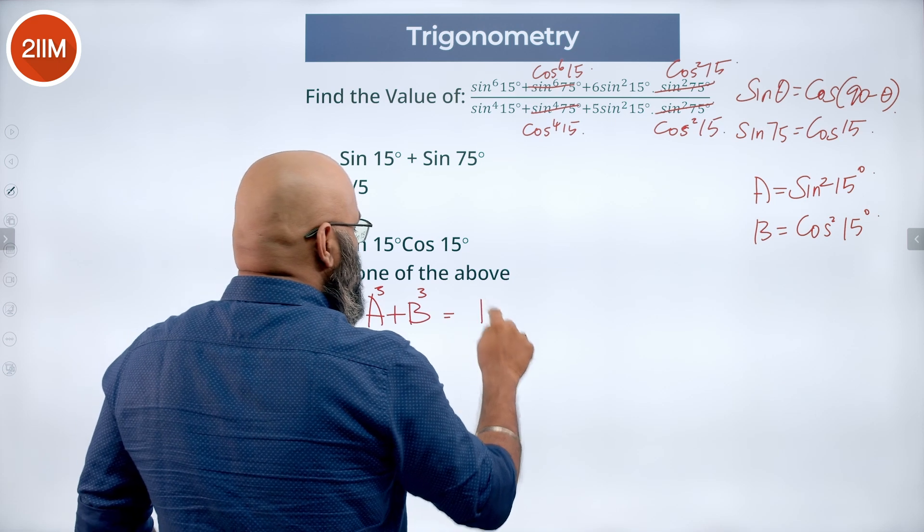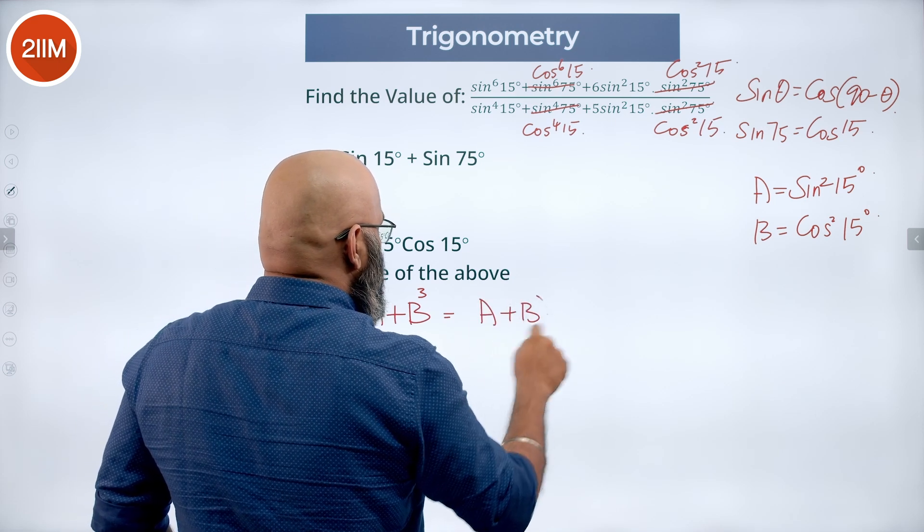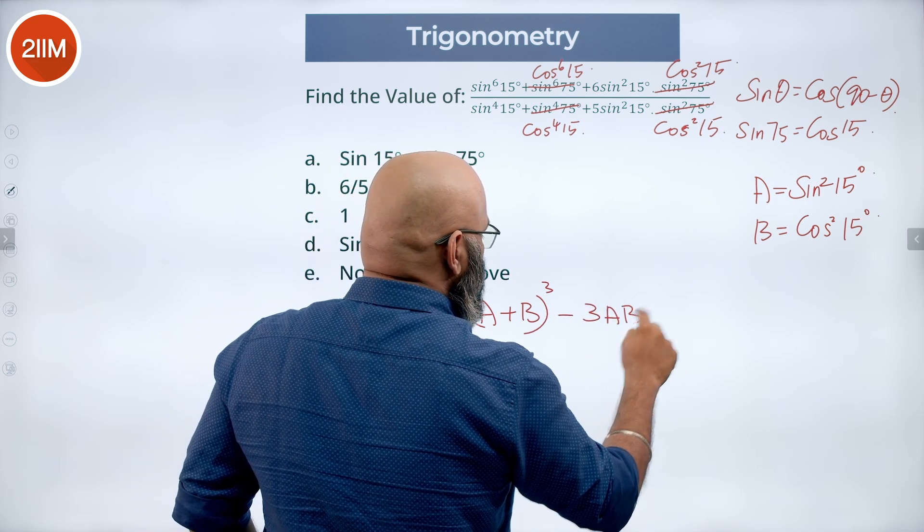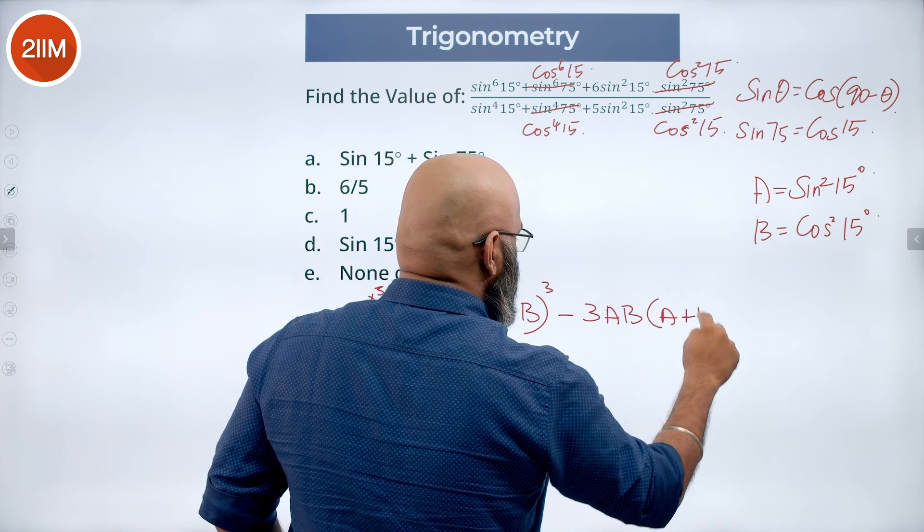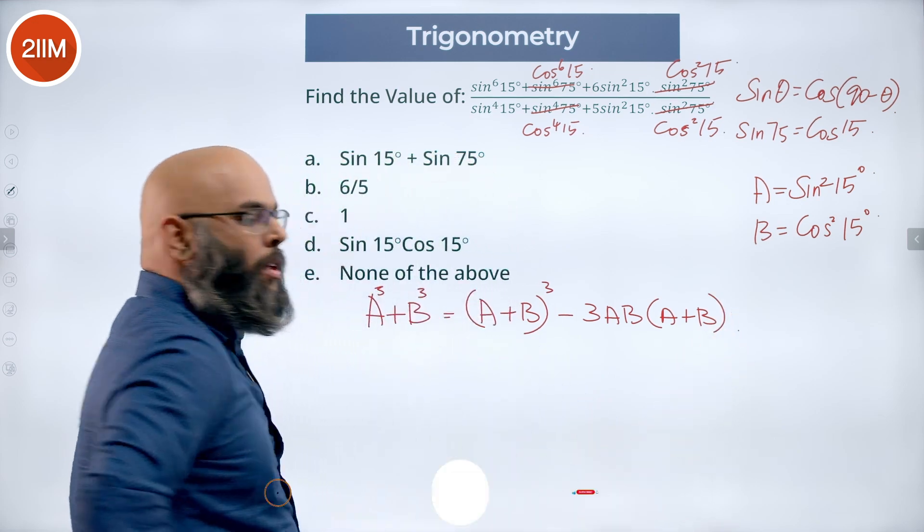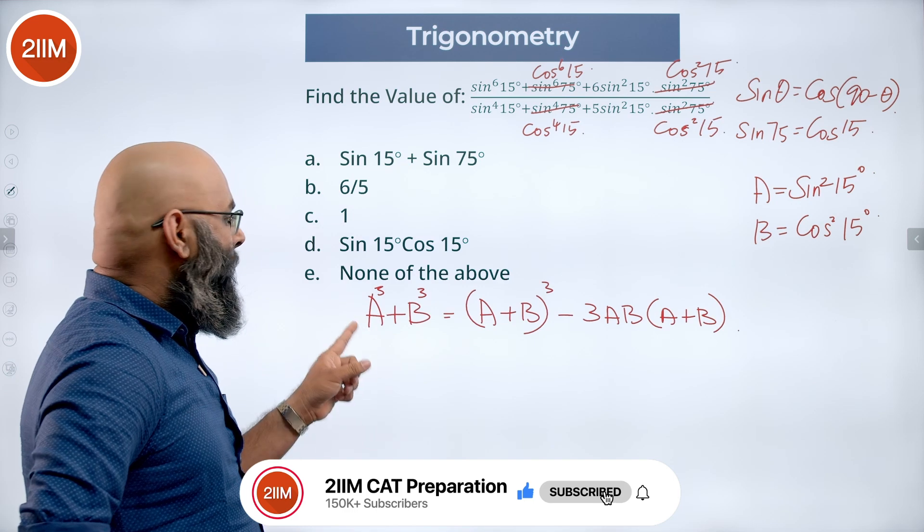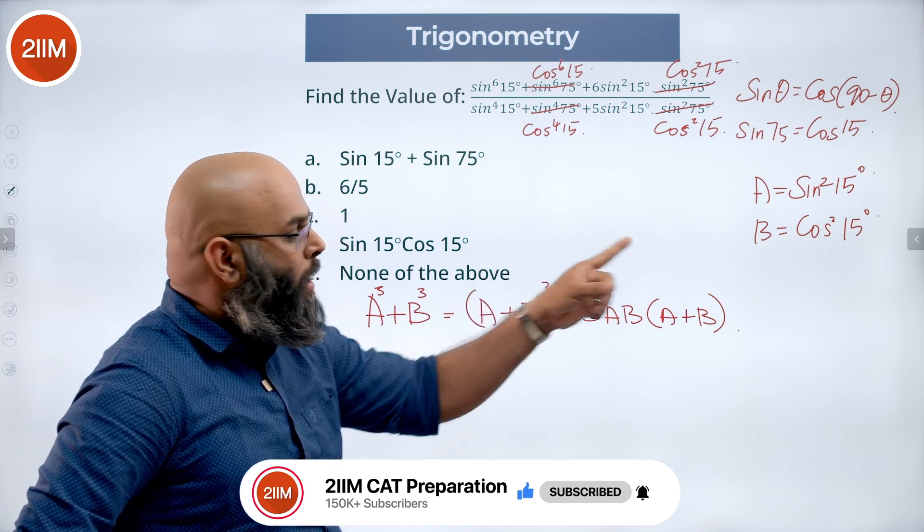So I can call it a plus b, we need a cube plus b cube, but we can rewrite it as a plus b the whole cube minus 3 times of ab into a plus b, right we can rewrite a cube plus b cube as this format where a is sin square and b is cos square.